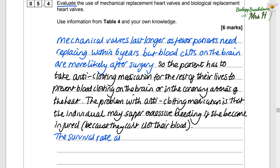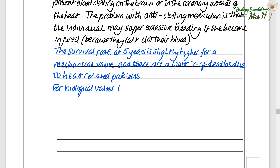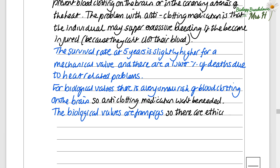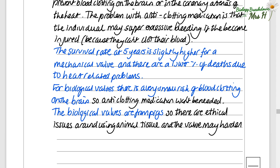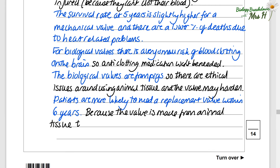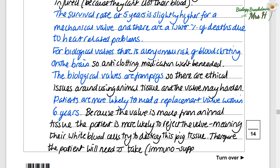The survival rate at five years is slightly higher for a mechanical valve and there are a lower percentage of deaths due to heart related problems. For biological valves, there is a very small risk of blood clotting on the brain, so anti-clotting medication won't be needed. The biological valves are from pigs, so there are ethical issues around using animal tissue, and the valve may harden. Patients are more likely to need a replacement valve within six years, and the patient is more likely to reject the valve — their white blood cells try to destroy the pig tissue — so they'll need immunosuppressant medication, which may make them susceptible to common illnesses.